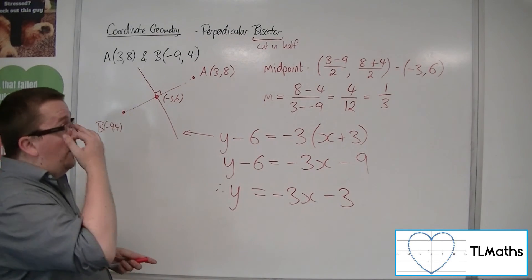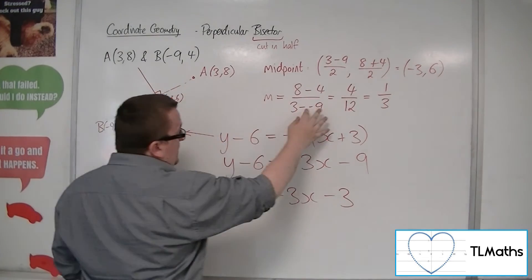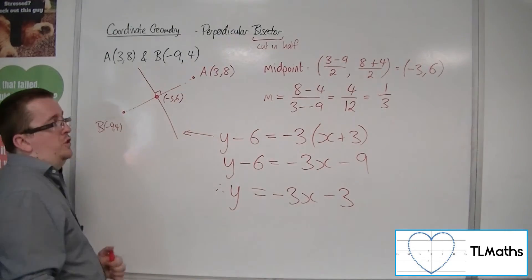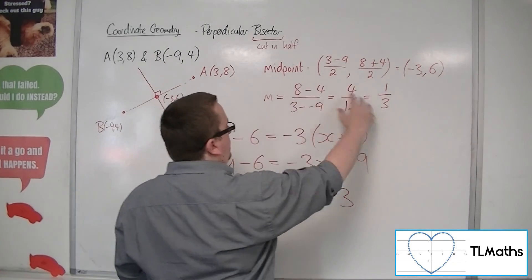Okay? So it requires us to find the midpoint of the two coordinates, find the gradient of the chord that joins those two coordinates, and then use the negative reciprocal of that gradient and the midpoint to generate the equation of the line that's required.